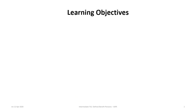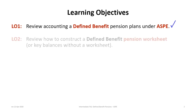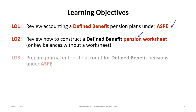This tutorial has five key learning objectives. The first is to review accounting for defined benefit pension plans under ASPE. Next, to review how to construct a defined benefit pension worksheet — or I'll show you an alternative as I did in tutorial 10a. Third, to prepare journal entries to account for defined benefit plans under ASPE.